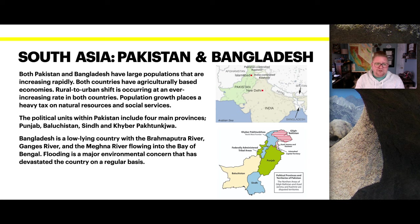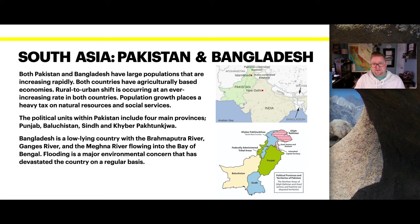Bangladesh is a low-lying country where the dominant river, the Ganges, flows into the Bay of Bengal. Flooding is a major environmental concern that has devastated the country on a regular basis, though flooding can also be important for releasing nutrients. Dealing with monsoonal rains, the rate of erosion sometimes exceeds that of deposition, which becomes quite troublesome.